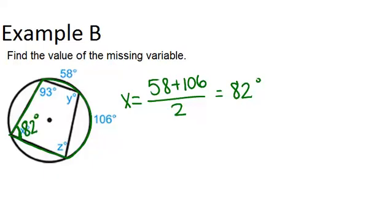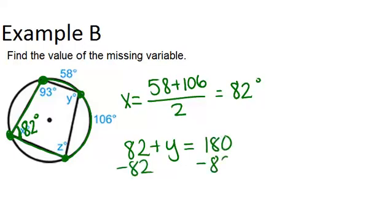Now because this is an inscribed quadrilateral, all four of these points are on the circle. That means that the 82 degrees and y are supplementary. So 82 plus y have to equal 180 degrees. We can solve this for y by just subtracting 82 from both sides and get that y must equal 98 degrees.